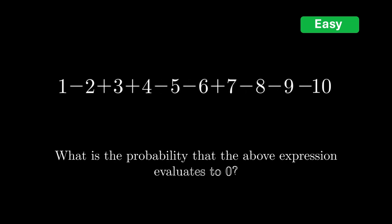Alright, let's move on to the next problem. The numbers 1 through 10 are written on a blackboard. We randomly fill the spaces between them with either a plus or minus sign. What is the probability that the above expression evaluates to zero? Pause the video here if you want to give it a try.